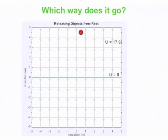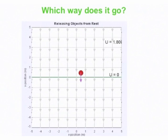When you let it go from rest — whether it's a baseball or a positive charge in this field — it falls down. It accelerates in the same direction as the field, in the direction of decreasing potential energy, and toward u equals zero.